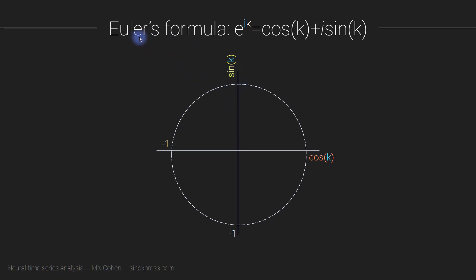So here is Euler's formula, sometimes called Euler's identity. e to the ik equals cosine k plus i sine k. So what does this mean? What does Euler's formula mean?